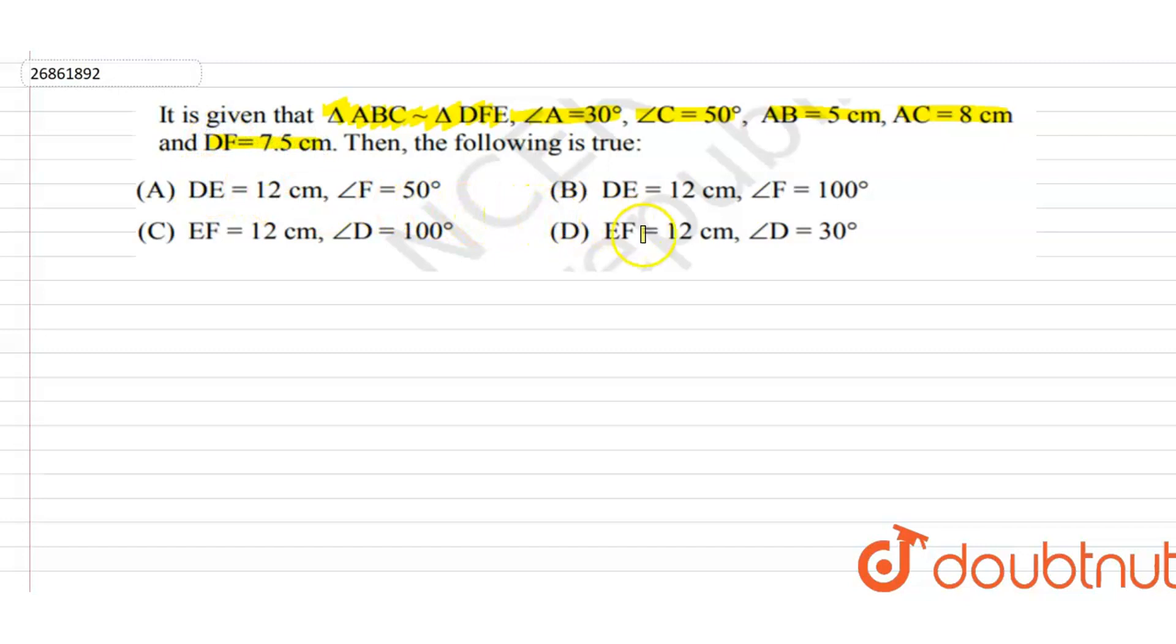Then, the following is true. We will show you the four options. Let's take a diagram. We have two triangles. Triangle ABC with vertices A, B, C and triangle DEF with D, E, F. Angle A is 30 degrees. Angle C is 50 degrees.